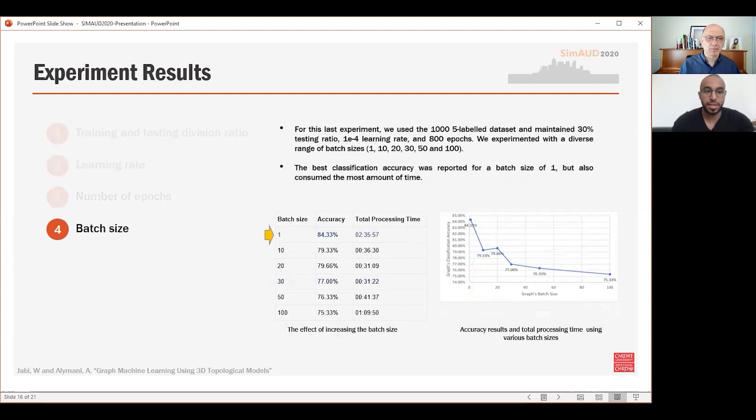The batch size of gradient descent in convolutional neural networks controls the number of training samples per iteration before the model internal parameters are updated. A large batch size allowed the neural network to learn faster but can become less accurate. For the last experiment, we used the 1000 5-label dataset, maintained a 30% testing ratio, a 1 × 10^-4 learning rate, and 800 epochs. We experimented with different ranges of batch size using 1, 10, 20, 30, 50, and 100 batch sizes. Unsurprisingly, the best classification accuracy was reported for the batch size of one, but also consumes the most amount of time.